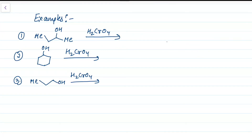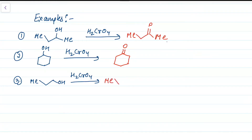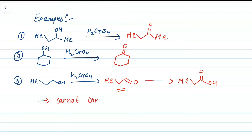Let us see some examples with chromic acid. In the first example we have a secondary alcohol — in the presence of chromic acid it oxidizes to form a ketone. In the second example, a secondary alcohol in a ring also oxidizes to form a cyclohexanone. In the third example, we have a primary alcohol: it first oxidizes to an aldehyde, but chromic acid is a very strong oxidizing agent — the reaction does not stop at aldehyde, and it further oxidizes to form a carboxylic acid. Inability to control the reaction is a major limitation.